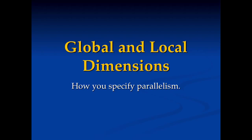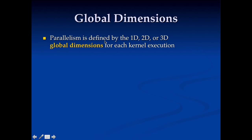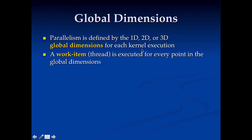The first OpenCL concept we're going to talk about are global and local dimensions. These are the way OpenCL specifies the parallelism you want to execute — how you tell OpenCL if you want 1,000 threads or 10,000 threads. In global dimensions, you define parallelism in a 1D, 2D, or 3D array, specifying the global dimensions for each kernel execution. A work item or thread is executed for every point in the global dimensions, and each thread runs the kernel code you wrote.